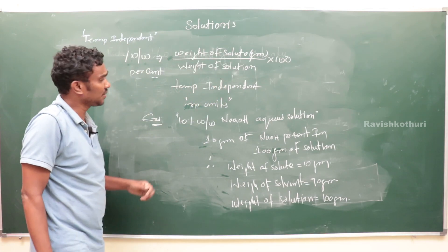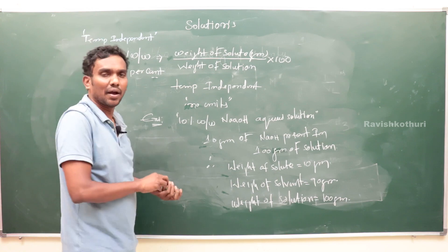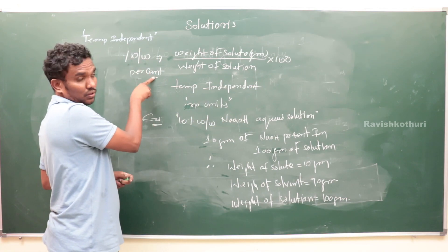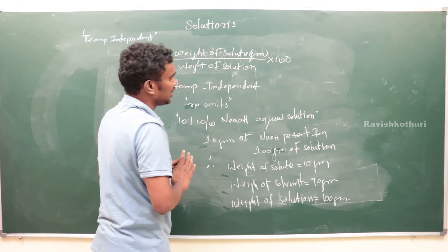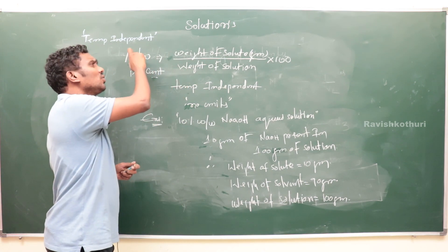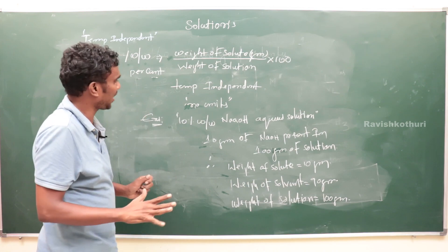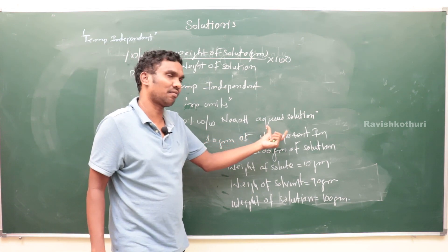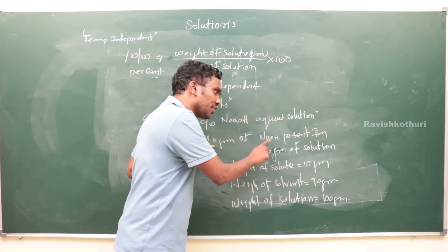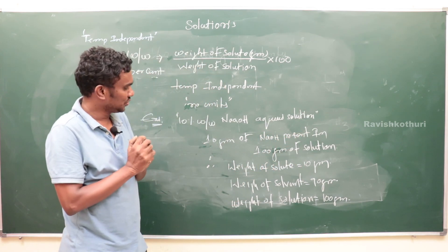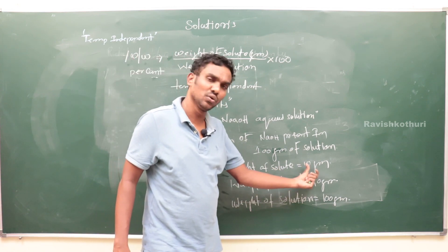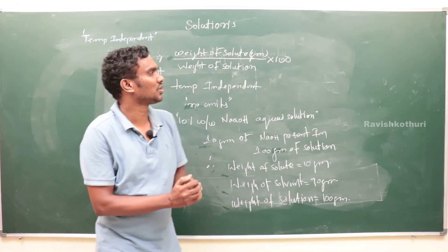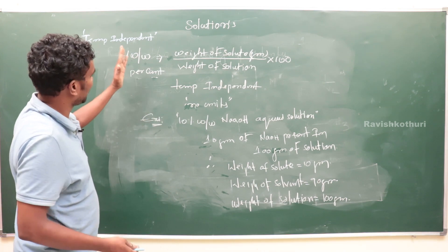To summarize: weight by weight percentage = weight of solute divided by weight of solution, multiplied by 100. It is temperature independent because only weight is included — volume is not included. It has no units. Example: 10% w/w NaOH means 10g NaOH in 100g solution; solvent = 90g.